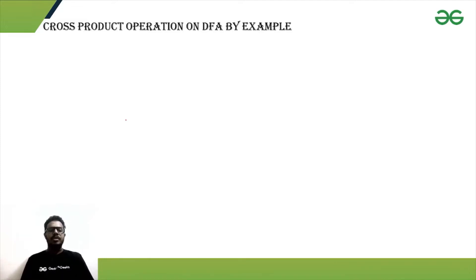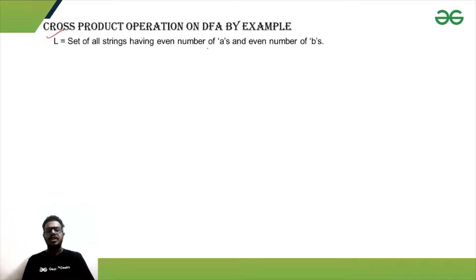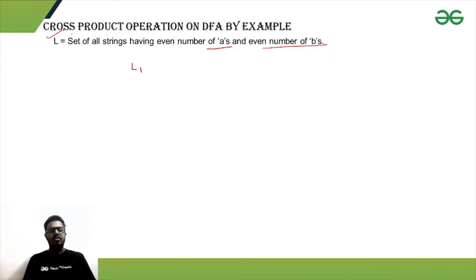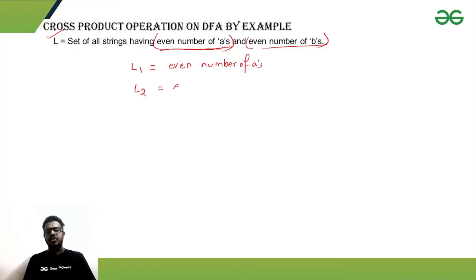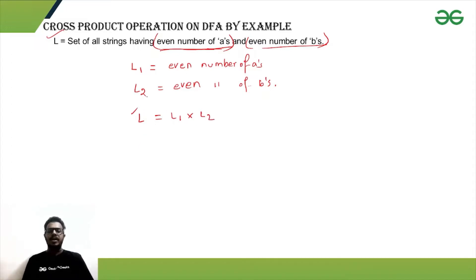We'll explain the cross product operation using a given example. The example is: the set of all strings having an even number of a's and even number of b's. We can divide the whole set into two parts — L1 is the set of all strings satisfying the first condition, which is even number of a's, and L2 is another language looking into the second condition, that is even number of b's. Our given language L will be basically L1 cross L2.